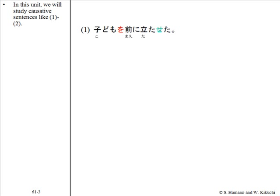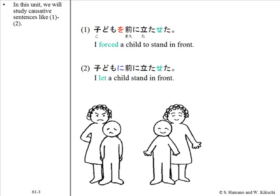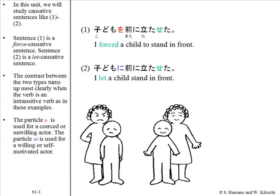In this unit, we will study causative sentences like examples 1 and 2: 子供を前に立たせた and 子供に前に立たせた. The contrast between the two types turns up most clearly when the verb is an intransitive verb. The particle O is used for a coerced or unwilling actor. The particle NI is used for a willing or self-motivated actor.